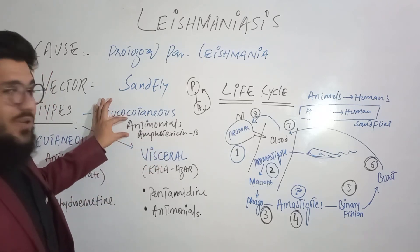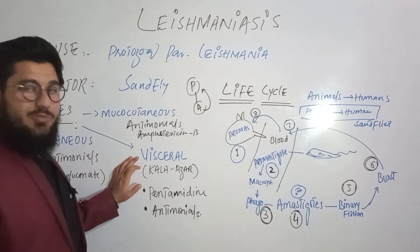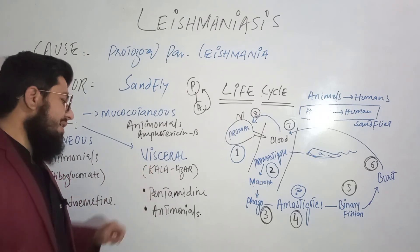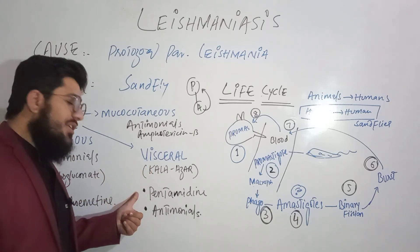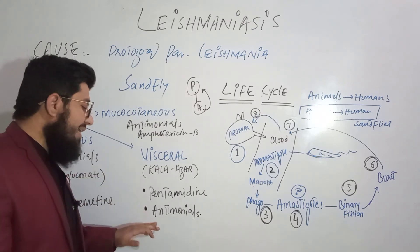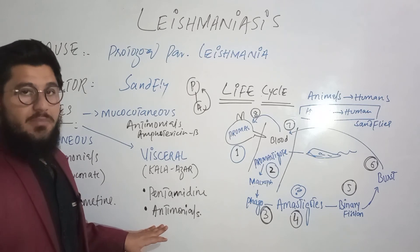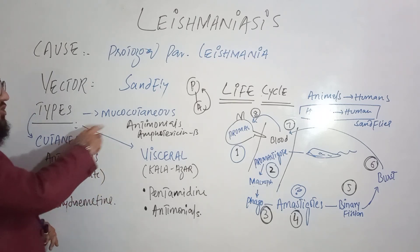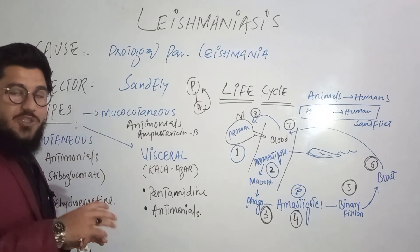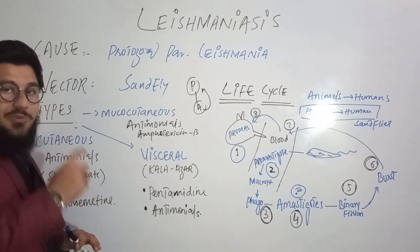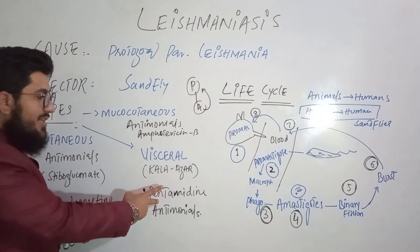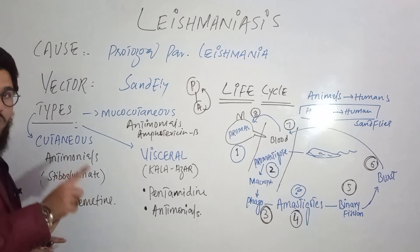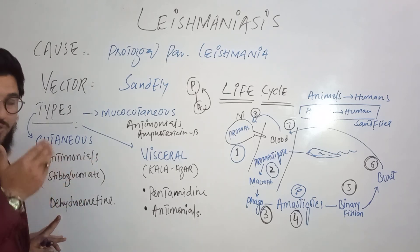For visceral Leishmaniasis — also named kala-azar — the drugs used to treat it are pentamidine and antimonials. Pentamidine is responsible for destroying DNA, whereas antimonials, as covered, are responsible for destroying the membrane of the Leishmanial parasite. So in summary: antimonials destroy the membrane in all three types; pentamidine inhibits DNA synthesis; amphotericin B destroys the membrane; and dehydroemetine destroys the protein.